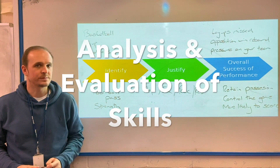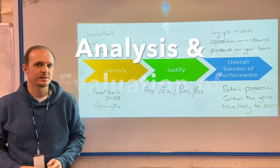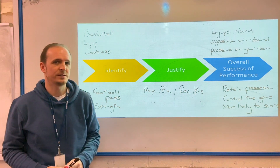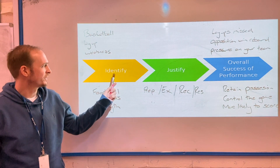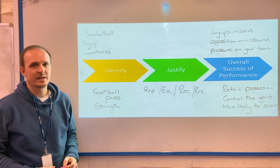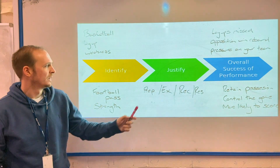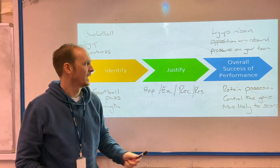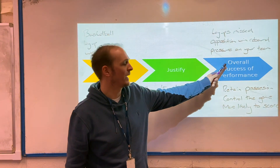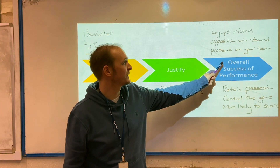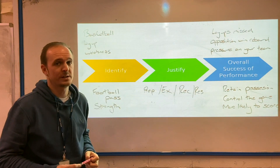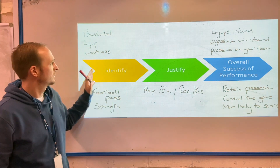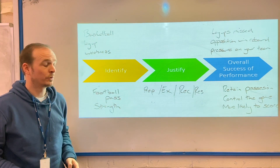A quick look at skills and when you're looking to highlight strengths and weaknesses in terms of skills, how to approach this task within your coursework. There are three things you've got to think about: you've got to identify what that particular skill is and whether it is a strength or a weakness. You then need to justify why you think that skill is either a strength or a weakness, and then look at how that skill is affecting the overall success of your or your team's performance.